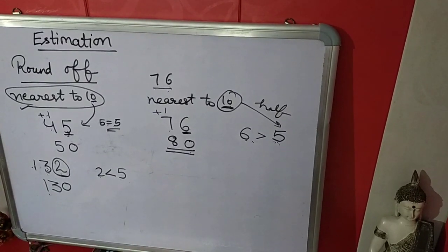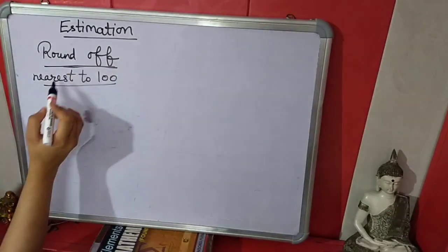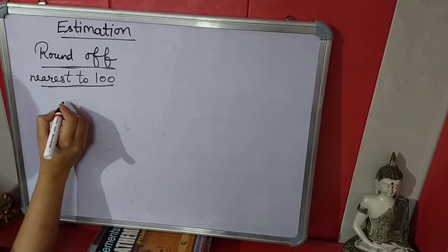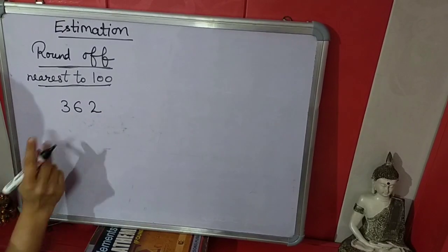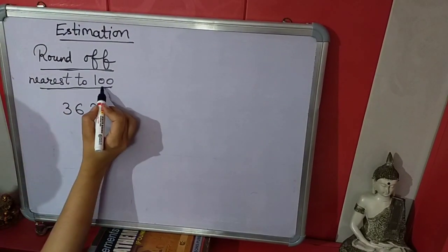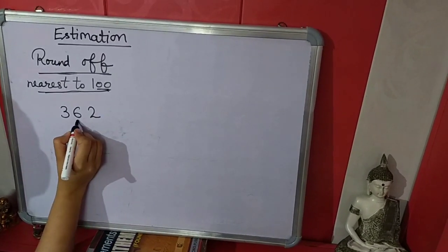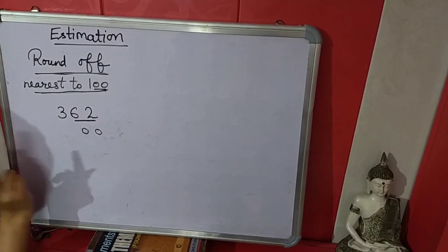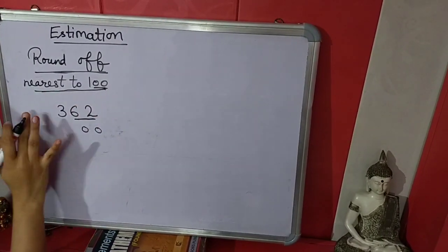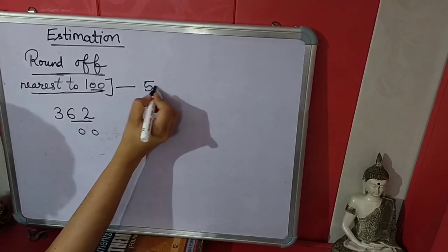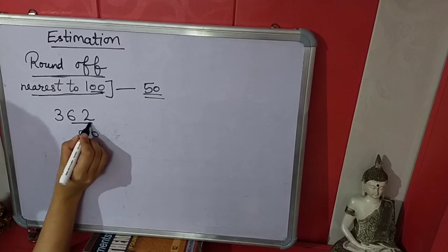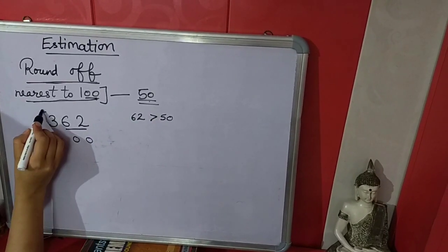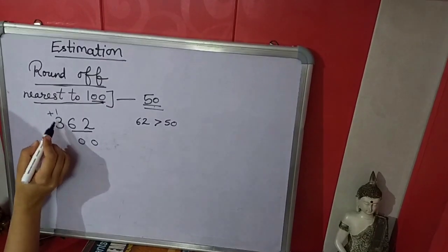That is the rule for nearest to 10. Now next we will estimate nearest to 100 using the same rules. We have 362 and we have to estimate nearest to 100. In 100 there are 2 zeros, so we convert the last 2 numbers into zeros. In the previous rule for nearest to 10, we compared to 5 because 5 is half of 10. But now what is the half of 100? It is 50. So we compare the last 2 digits, 62, to 50. Since 62 is greater than 50, we add 1 in the next number: 1 plus 3 equals 4, so the answer is 400.